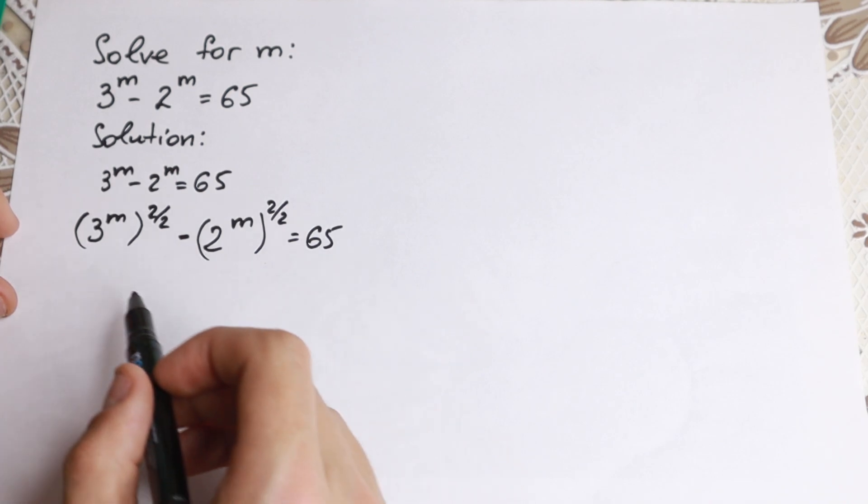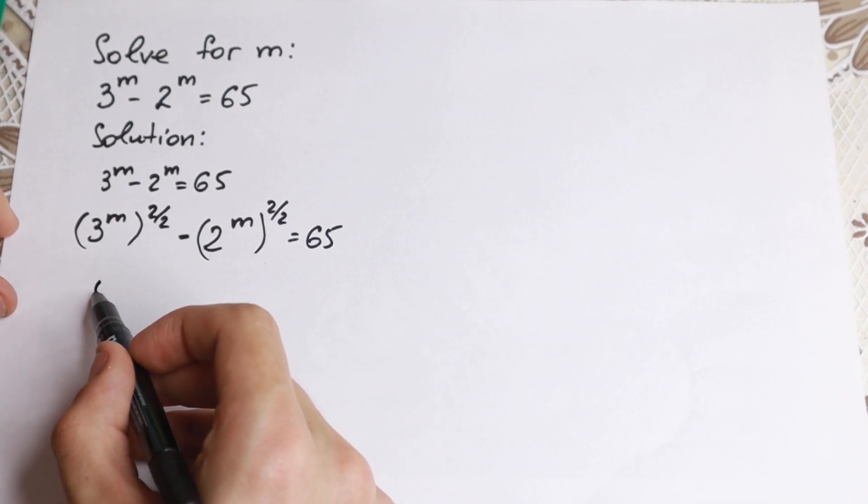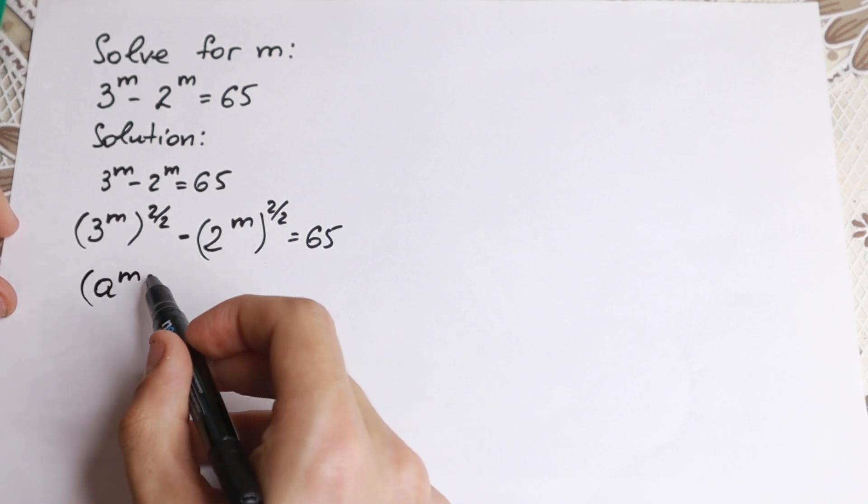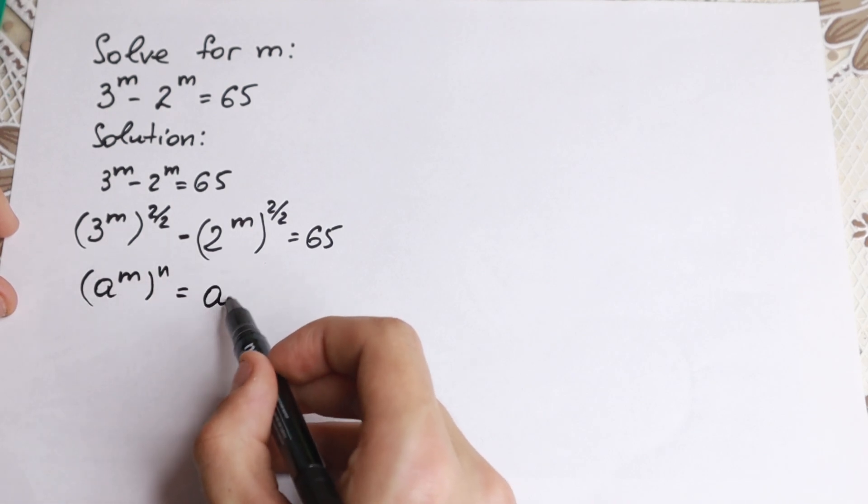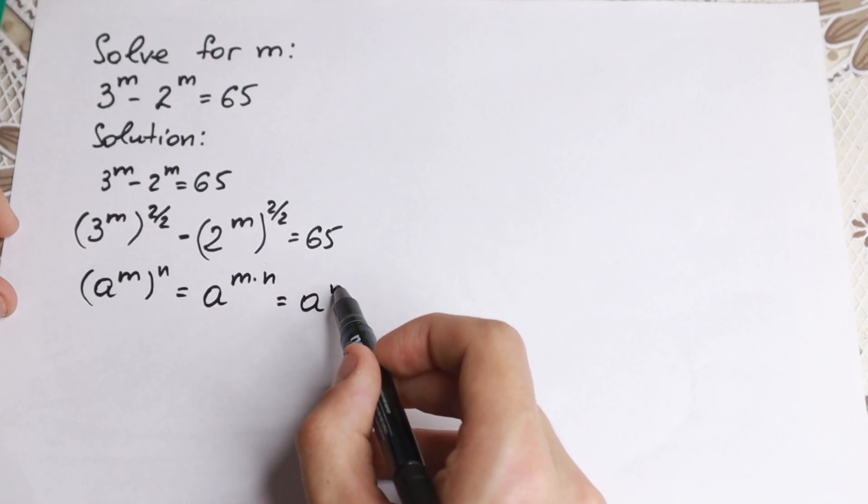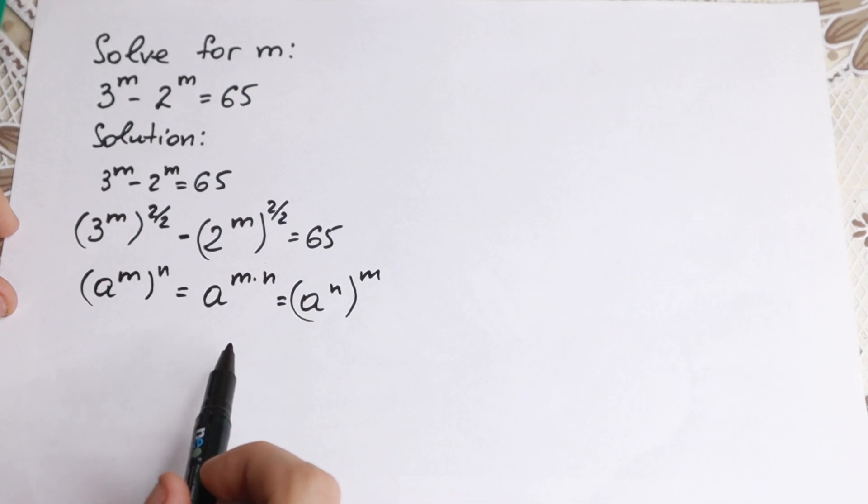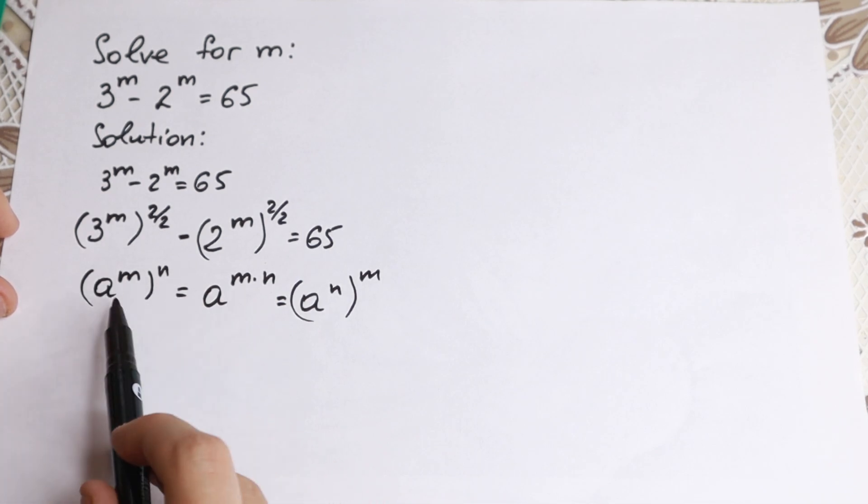I want to show you a really good rule or property. a to the power m raised to the power n, we can easily write it as a to the power m times n, or we can rewrite it as a to the power n raised to the power m. This is a really good triple rule. It works in both ways.